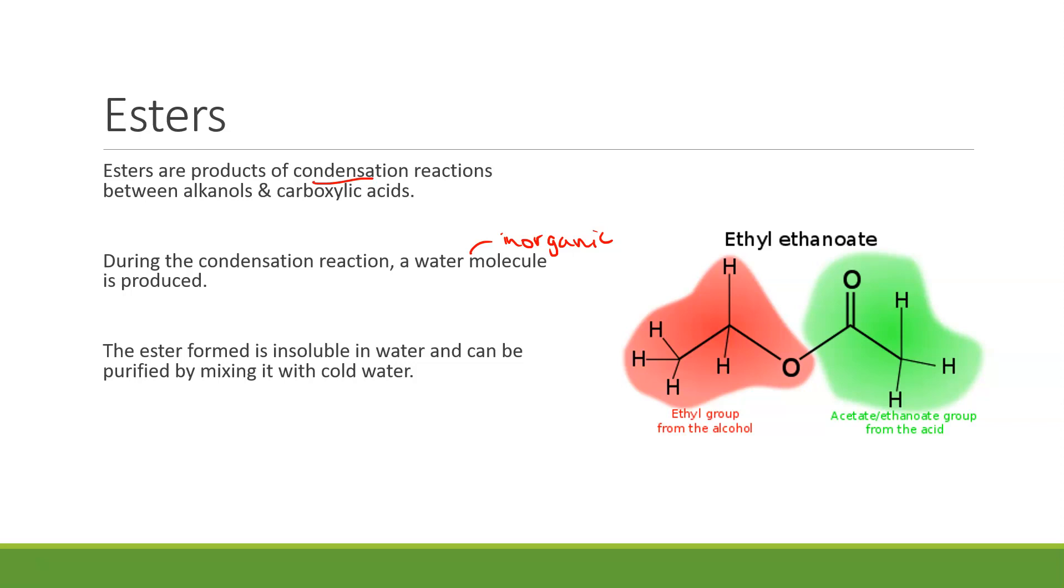In all the previous reactions, we haven't seen an extension of the carbon chain. The molecule itself doesn't get bigger unless we're talking polymerization. With esterification, because we're joining two molecules together, the final product molecule is actually going to be larger, and we lose the inorganic byproduct of water. The esters formed are sweet-smelling. They're typically insoluble and form layers on top of the water, while the unreacted sulfuric acid that we use to catalyze this reaction will dissolve into the water away from the final organic product.